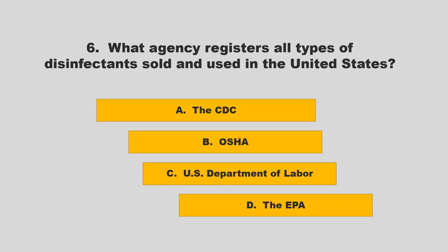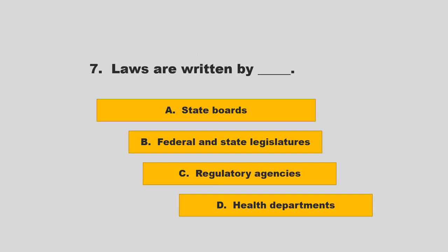What agency registers all types of disinfectants sold and used in the United States? Options: the CDC, OSHA, U.S. Department of Labor, or the EPA. The correct answer is D: the EPA.